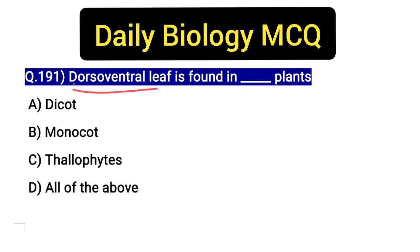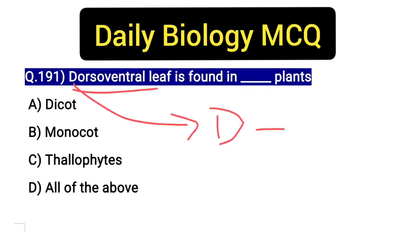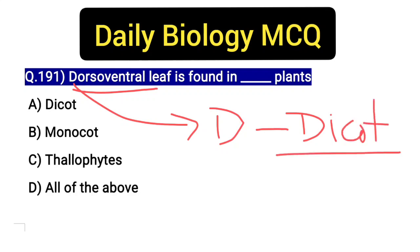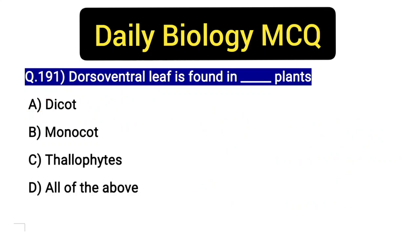Dorsoventral leaf — D for dorsoventral, D for dicot. Remember this trick: the dorsoventral leaf is found in dicot plants. The opposite, isobilateral leaf, is found in monocot plants.